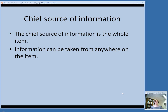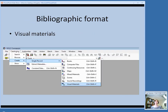When getting started cataloging, the first thing you need to know is your chief source of information — and the good news is it's pretty much anything. The chief source of information is the whole item; information can be taken from anywhere. Based on the three-dimensional artifacts rules, kits are considered to be a visual material. You'll need to choose that bibliographic format when creating a record. Here's an example of how you create that workform in OCLC Connection; your local system may differ slightly but should still have a visual materials option.